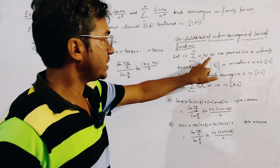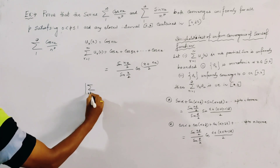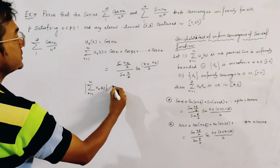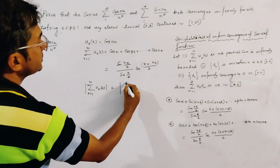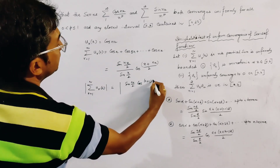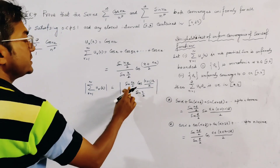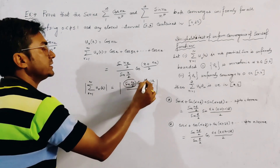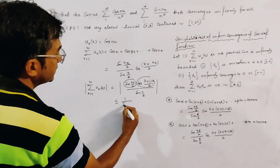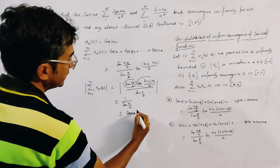To show this partial sum is uniformly bounded, we take the modulus of the summation r=1 to n of u_r(x). This is given by the modulus of sin(nx/2) · cos((n+1)x/2) divided by sin(x/2). Since the maximum value of both sin and cos is 1, we can write this is bounded by 1/|sin(x/2)|, which equals |cosec(x/2)|.